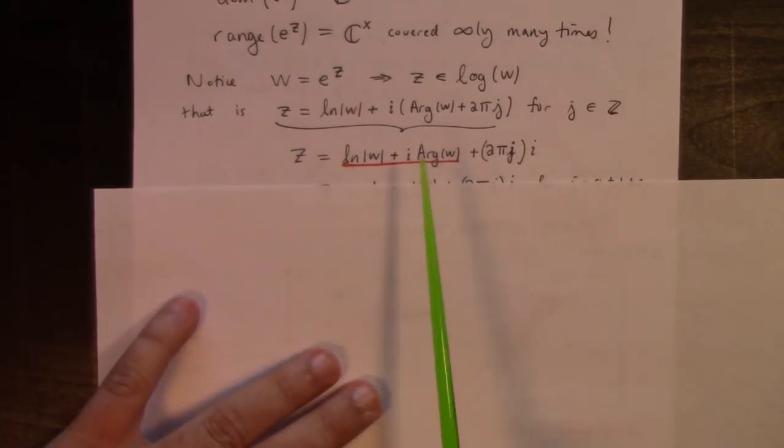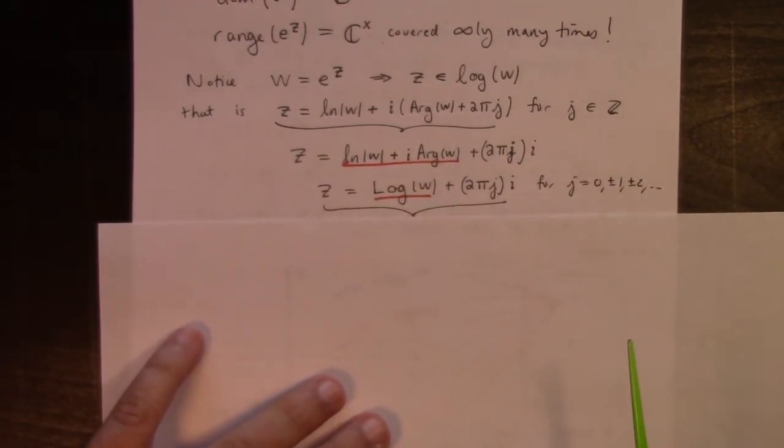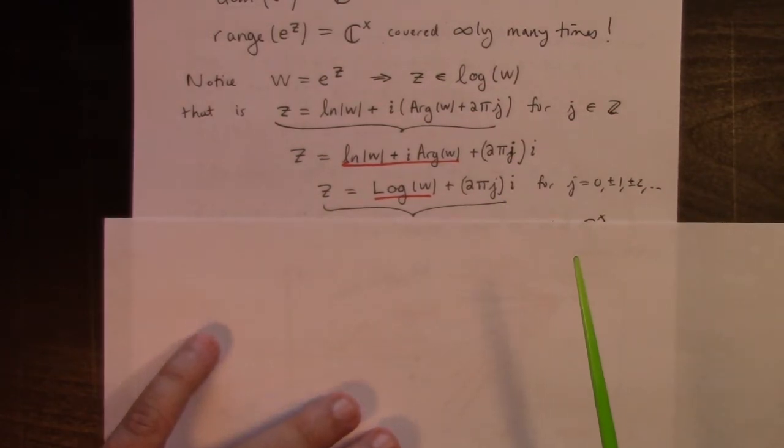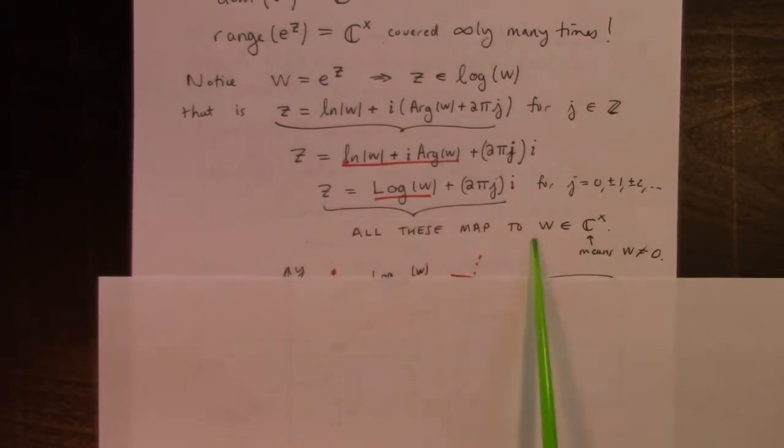The underlined in red is actually the principal logarithm of w. So basically, to hit w, if we want to get w, if we want to map to w, we can take the principal logarithm of w and feed it to the exponential, or the principal logarithm of w plus any 2 pi multiple of the imaginary number i. All of those map to w.